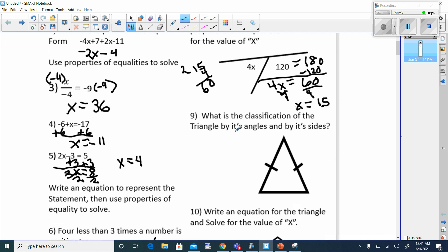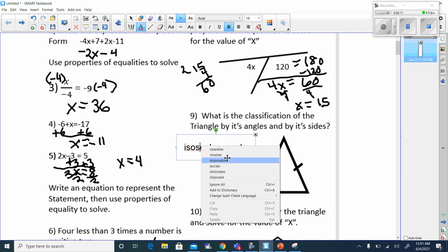What is the classification of this? This is an isosceles triangle because two sides are the same, so I would say isosceles. And it's also acute because all the angles are less than 90 degrees, so I'm going to go with isosceles acute. And I think I spelled isosceles wrong. There we go.